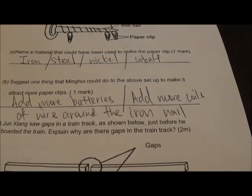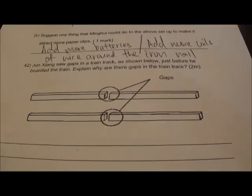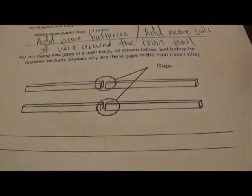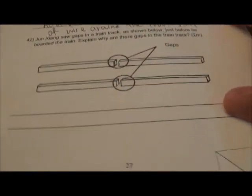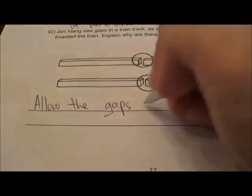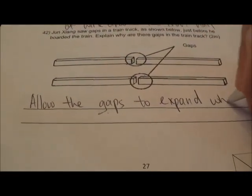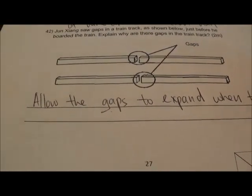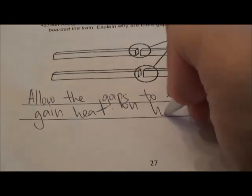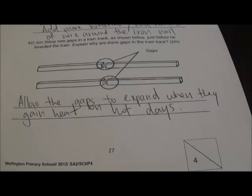Question 42: About the gaps in train tracks — this is a heat topic. Explain why there are gaps: to allow the tracks to expand when they gain heat on a hot day. That is the main purpose of the gap.